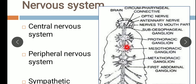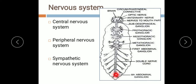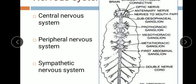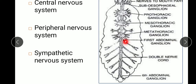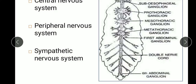From the subesophageal ganglion, a double ventral nerve cord arises and passes backwards up to the seventh abdominal segment. It bears three ganglia in the thoracic region: the prothoracic ganglion, mesothoracic ganglion, and metathoracic ganglion. In the abdominal region there are six ganglia — the first through sixth abdominal ganglia. All of these together form the ventral nerve cord, which is part of the central nervous system.